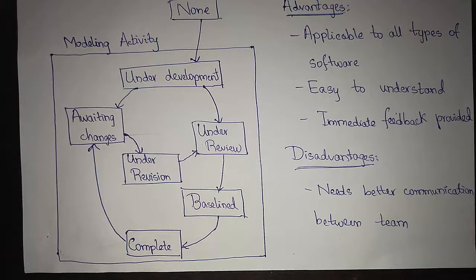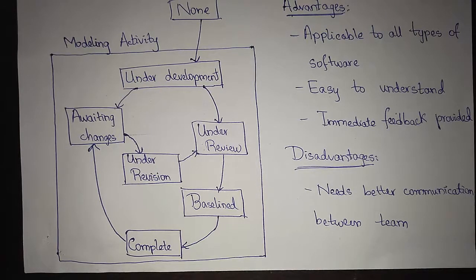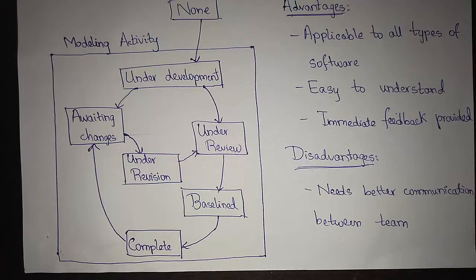The advantage is that it is applicable to all types of software and it is very easy to understand. It gives immediate feedback and provides an accurate picture of the current state of the project to both developers and customers. The customers also have a clear idea of the project development. The main disadvantages are that we need to have better communication between the team. The development team sometimes might be confused, and remembering the status of different activities is required. These are the disadvantages we can see in evolutionary models.